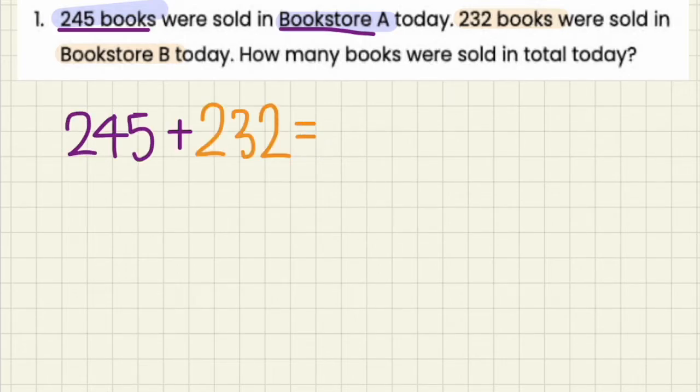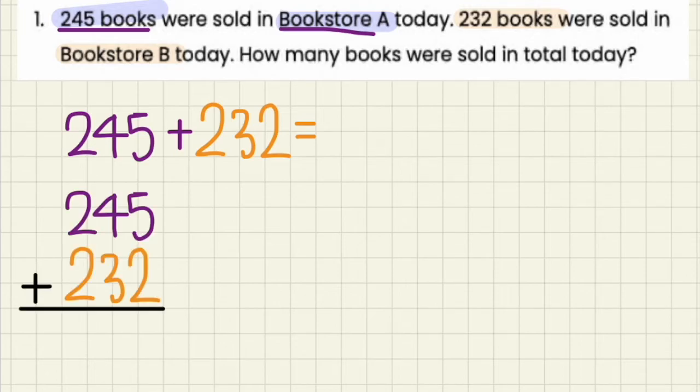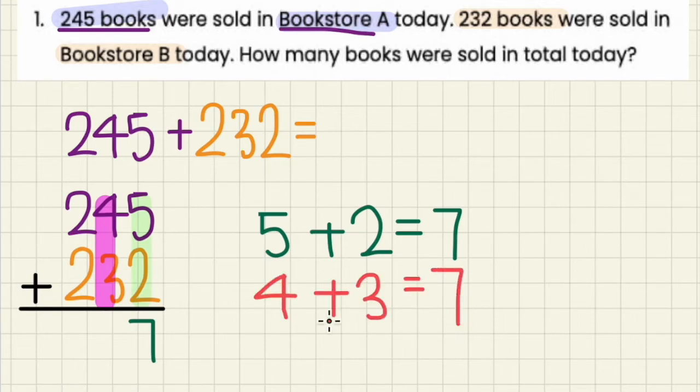So that would be 245 plus 232. Again, let's write that in a vertical form and let's add the ones place first. Do you know what 5 plus 2 is? That's right, it's 7. So let's write 7 down. And we can now move on to adding the tens place together. So numbers 4 plus 3. That would also equal to 7. So let's write that down. We only have the hundreds place left. What is 2 plus 2?